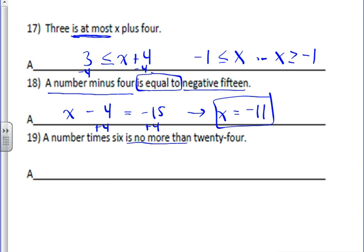So a number times six, any variable you want, we'll just use x, is 6x. That's what a number times six is. Is no more than, so that's less than or equal to, because it can equal the amount, but it can't be more than that. And what's it no more than? 24.